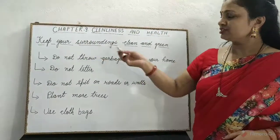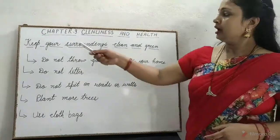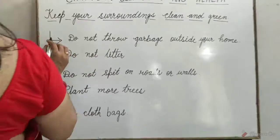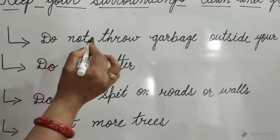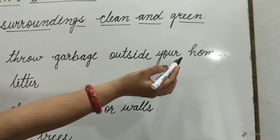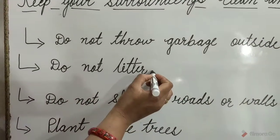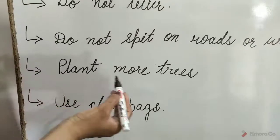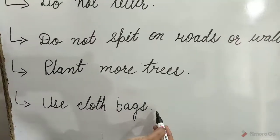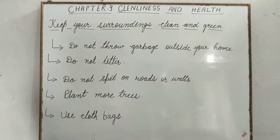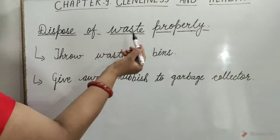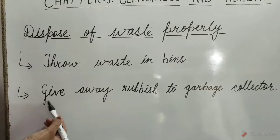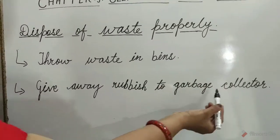Children, here is a flow chart that describes how to keep your surroundings clean and green. Do not throw garbage outside your home. Do not litter. Do not spit on roads or walls. Plant more trees. Use cloth bags. Dispose of waste properly. Throw waste in bins. Give rubbish to the garbage collector.